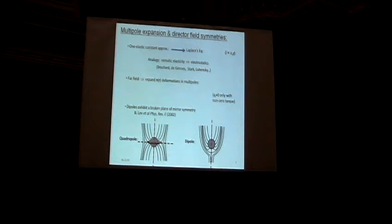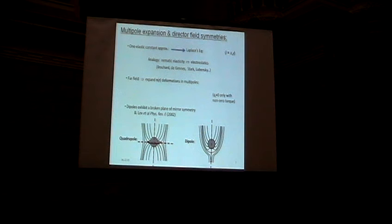And so there's a nice elegant analogy between the elasticity of nematics and electrostatics that was recognized by Brochard and de Gennes quite a while ago, and sort of revisited by Stark and Lubensky to understand the spherical colloid system. And so the idea is basically, in the one-elastic constant approximation, the two components of the director field transverse to the far field director obey Laplace's equation. So you can expand these things in multipoles far away from the particle.